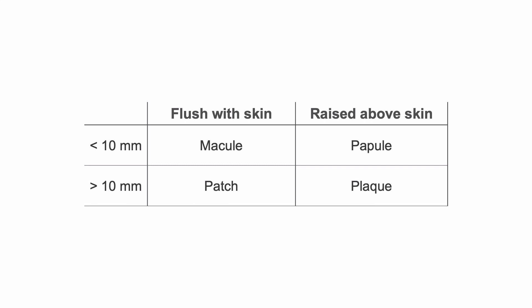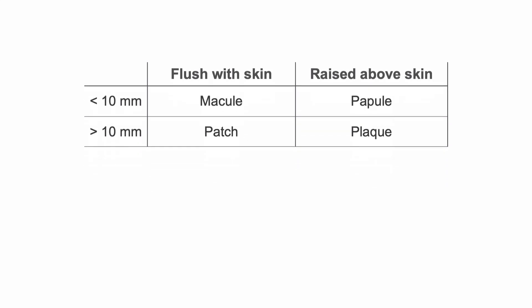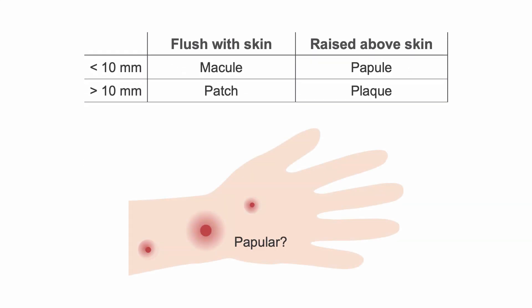The most common classification scheme for skin disorders is purely based on morphologic descriptions of the rash, such as macular, papular, patch, and plaque, which are defined based on size greater or less than 10 millimeters and whether it is flush with the skin or raised above it.